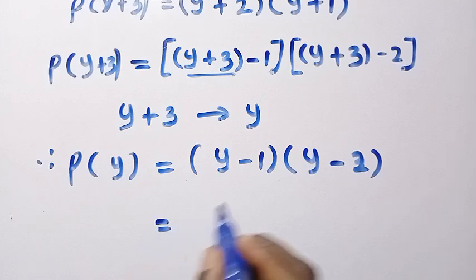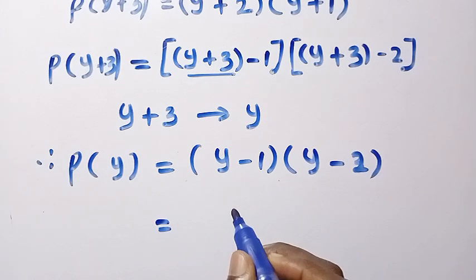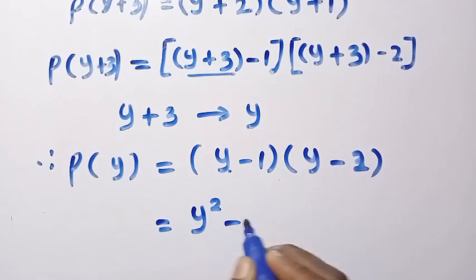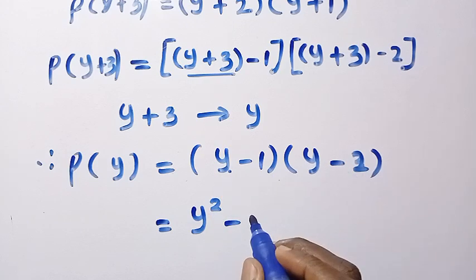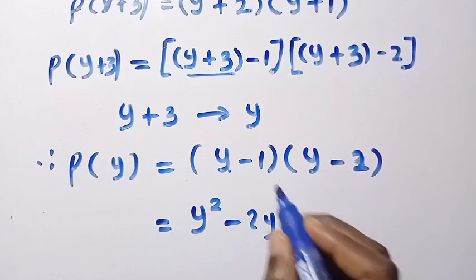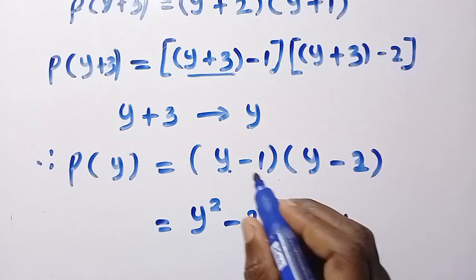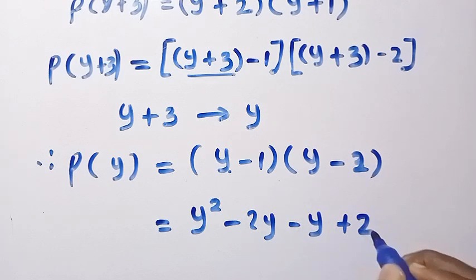So next, let's expand this out. y times y, that is y squared minus y times 2. We have 2y minus 1 times y, that is y plus 1 times 2. That is 2.